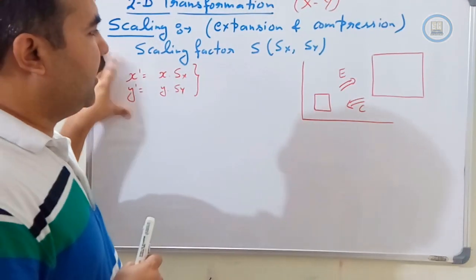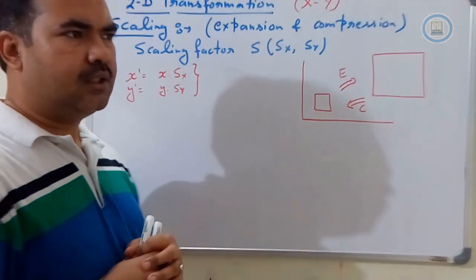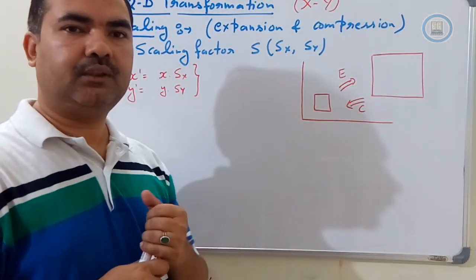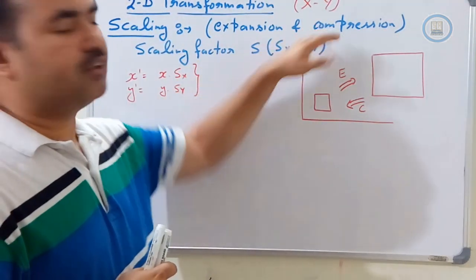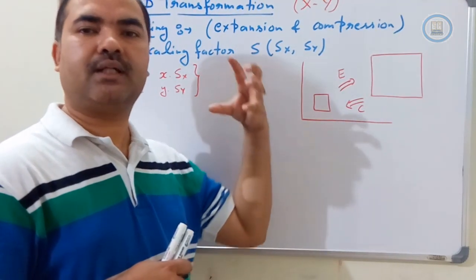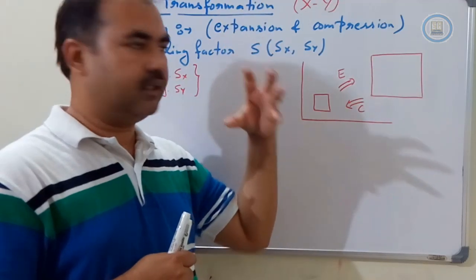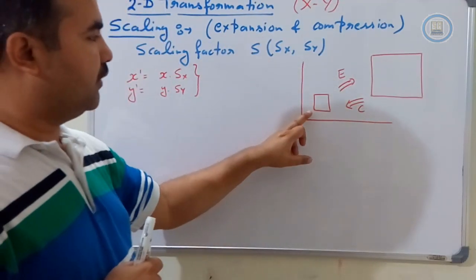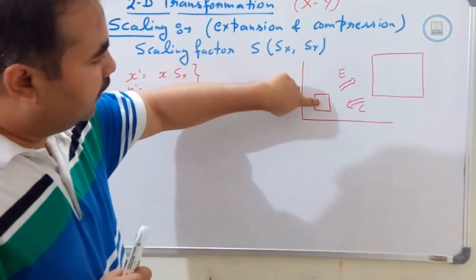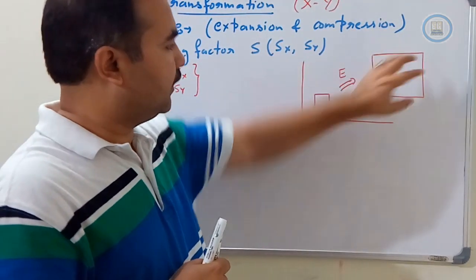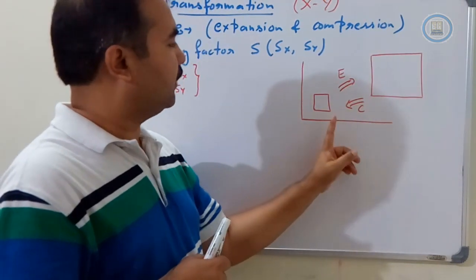The scaling operation cannot be displayed on an individual pixel because it is the expansion and compression of the object — the position of the pixel will be changed. Scaling is also called expansion and compression of the object. We are going to apply this operation on the complete object. Either it will be enlarged or it will be compressed — the size will be reduced or increased. When we apply the expansion operation, the size of the object will be enlarged, and when we apply the reduction or compression operation, the size will be compressed.